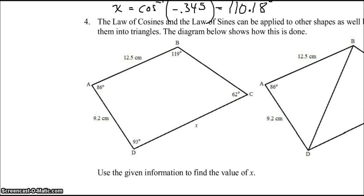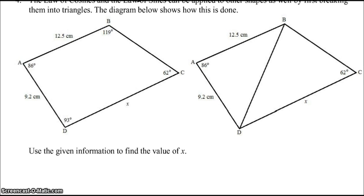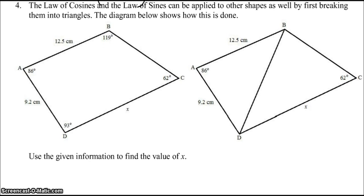Anywho, the law of cosines and the law of sines can be applied to other shapes as well by first breaking them into triangles. The diagram below shows how this is done. So we have this quadrilateral. And there's a missing side X. And so we could divide that quadrilateral into two triangles. And then, let's see, here we have an angle 62 degrees. So use the information to find the value of X.